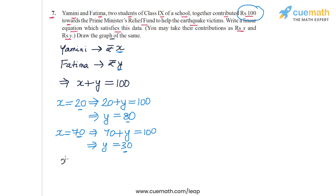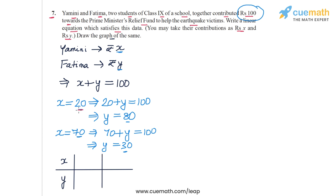Now let's write these two solutions in the form of an XY table so that they're easy to read. We draw two columns for the two solutions. The first solution is X equal to 20 and Y equal to 80, or the point (20, 80). The second solution is X equal to 70 and Y equal to 30, or the point (70, 30).